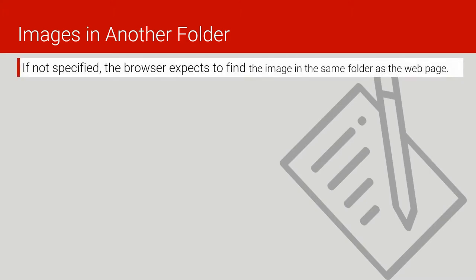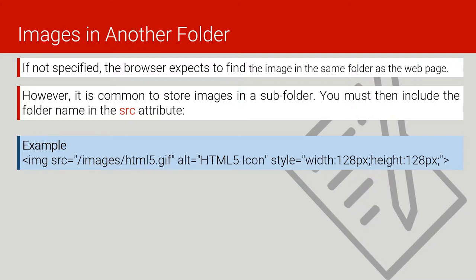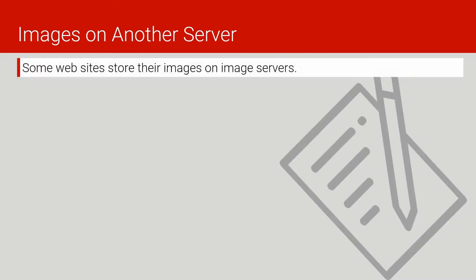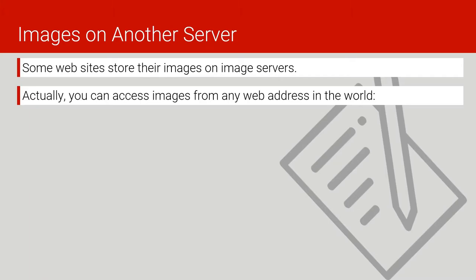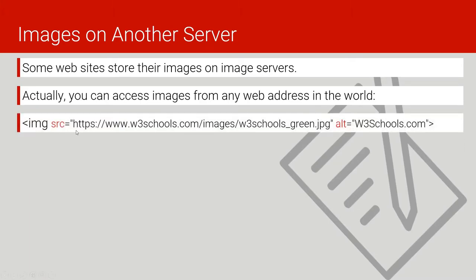This is how we include an image from a different folder. If the image, for example html5.gif, is inside an images folder, you put the folder name then a slash then the image filename. For images on a different server, you must specify the full URL with https and the domain where the image is located, otherwise your image will not appear.